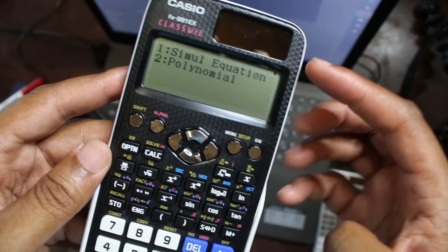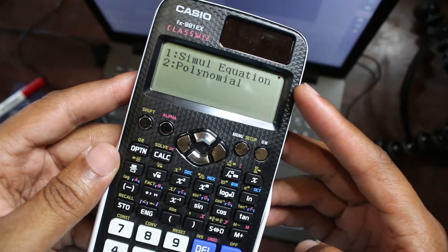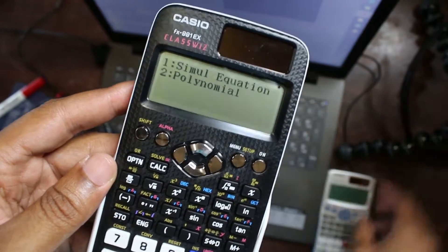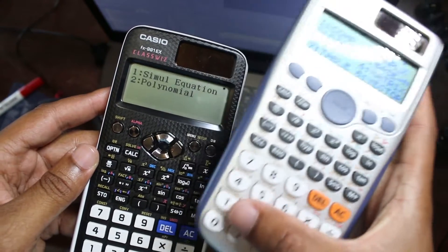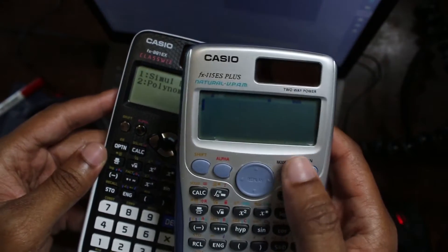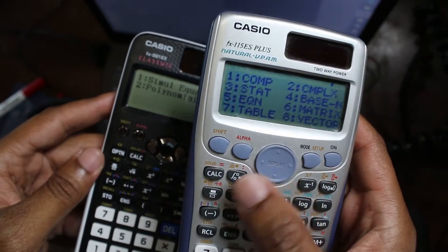Here they're telling me to pick between simultaneous equations or polynomials. This calculator can do both. Let's see what happens when I press mode here. I was already on it, so normally it starts off on computation mode. When I press mode, I look for equation.